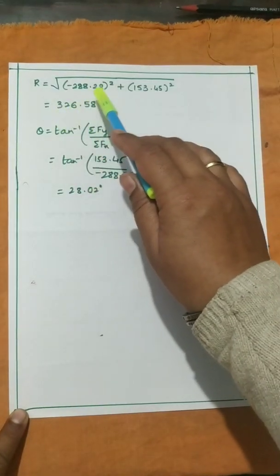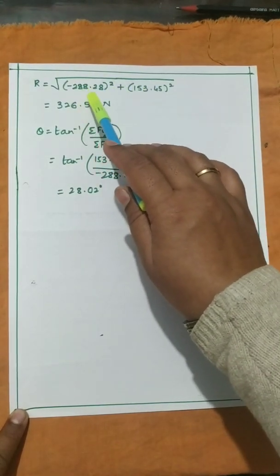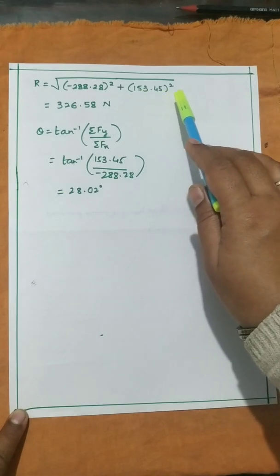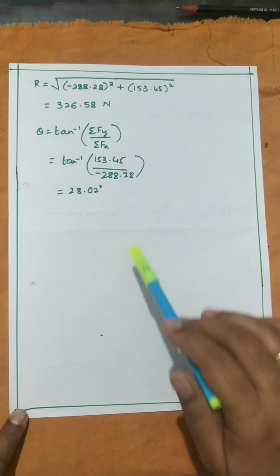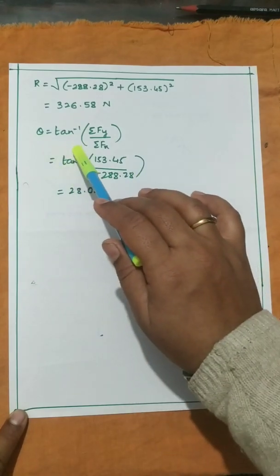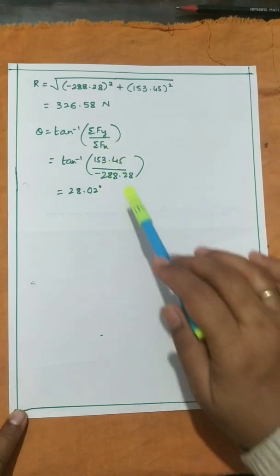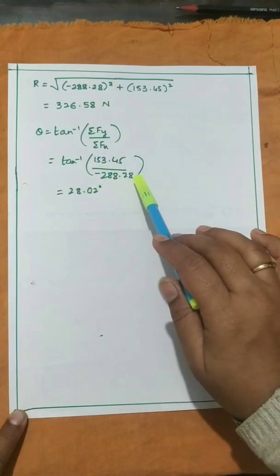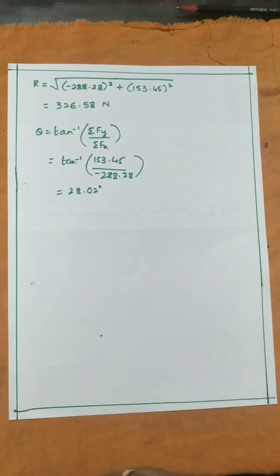Now we find the resultant magnitude: R = √(sigma Fx² + sigma Fy²) = √((−288.28)² + (153.45)²) = 326.58 N. The direction is θ = tan⁻¹(sigma Fy / sigma Fx) = tan⁻¹(153.45 / −288.28) = 28.02 degrees.